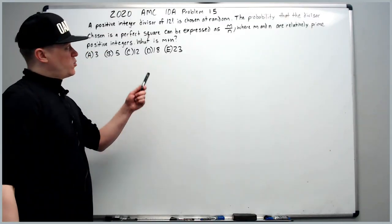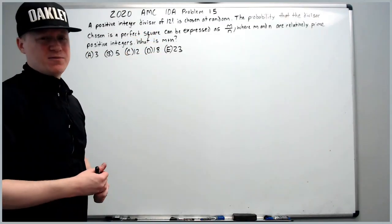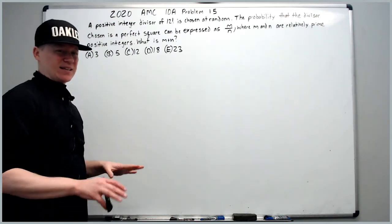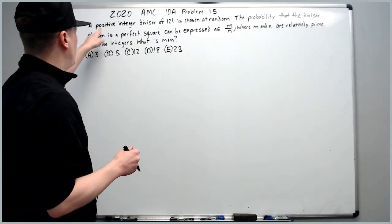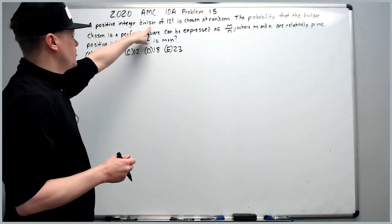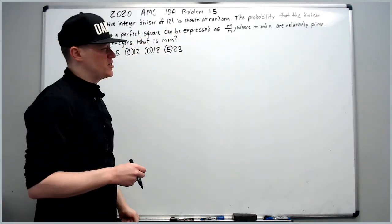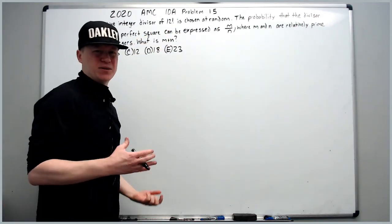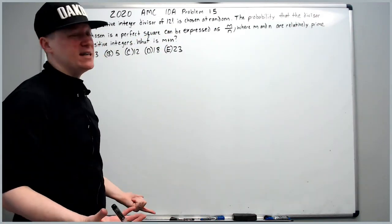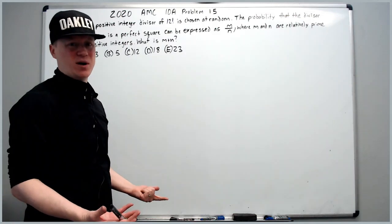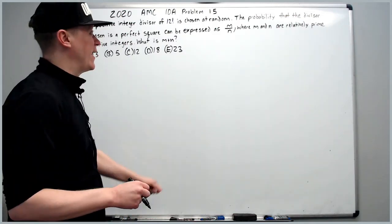On to the 2020 10A problem 15, the last problem of this set. A positive integer divisor of 12 factorial is chosen at random. Right away, we're going to need to know how many divisors 12 factorial has.